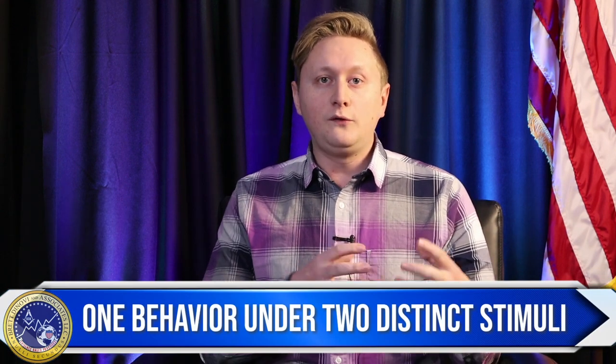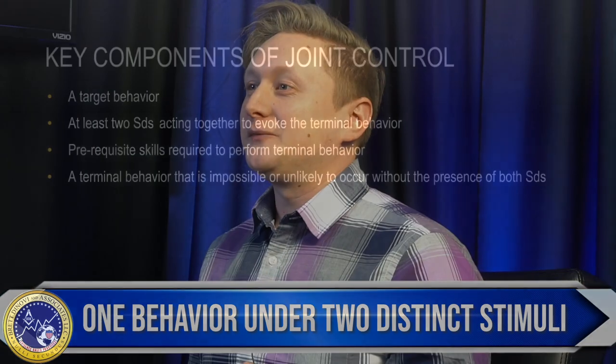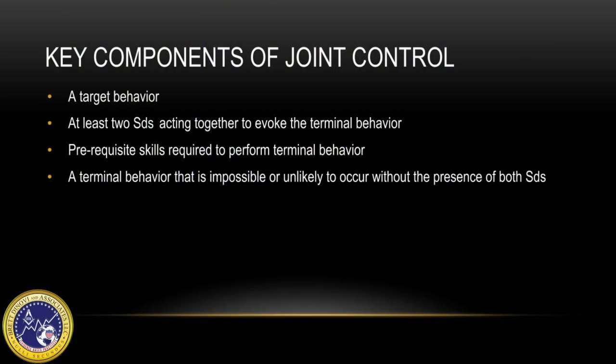The two separate stimuli have to act together to evoke that terminal behavior. The terminal behavior itself needs to be evoked under these two conditions if and only if the two contingencies have been met. So if you have two contingencies but one of them by themselves could evoke that behavior, it's not acting under joint control anymore.